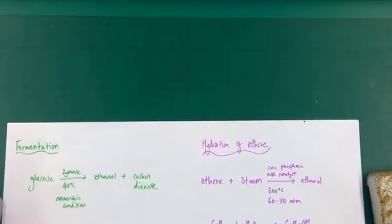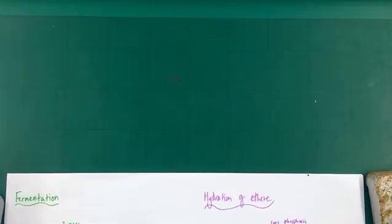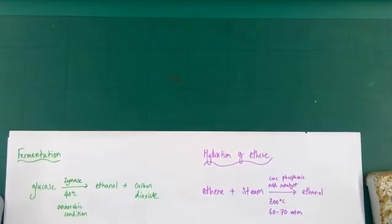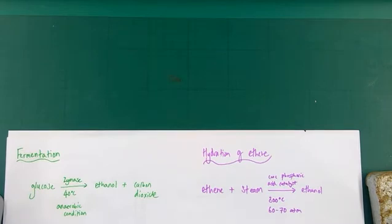Hydration of ethene, this is the other process. It has very different conditions. This is where we take ethene, an alkene, a small alkene two carbons in length, and react it with steam under quite vigorous conditions: 300 degrees centigrade, 60 to 70 atmospheres of pressure, quite a high pressure there, and a concentrated phosphoric acid catalyst has to be present. We produce pure ethanol.